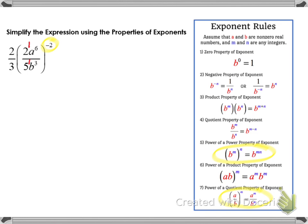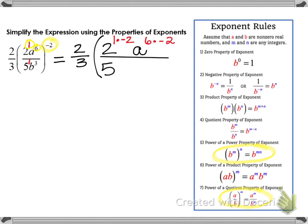It's important to remember that the number 2 has an exponent of 1, as does the number 5 in the denominator. The two-thirds we're going to keep on the outside of the parentheses for now. Inside the parentheses, we use the power of a power property: 2 to the first power raised to the negative second power means we multiply 1 times negative 2. Then a to the sixth raised to the negative second power means we multiply 6 times negative 2. In the denominator, 5 to the first raised to the negative second power, and b cubed raised to the negative second power means we multiply 3 times negative 2 for those exponents as well.